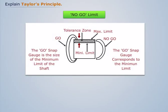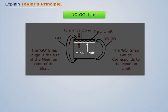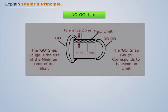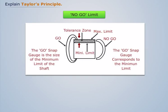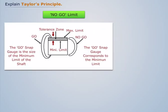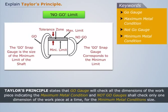The No-Go limit is the one between the two size limits which corresponds to the minimum material condition. The lower limit of a shaft and the upper limit of a hole are determined. The related terms are...